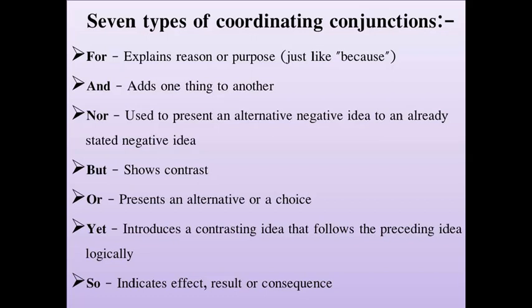First we have 'for' — we use 'for' to explain a reason or purpose, similar to how we use 'because'. After that we have 'and' — 'and' is used to add one thing to another. When we want to add a second thing to the first, we use 'and'. After that we have 'nor'.